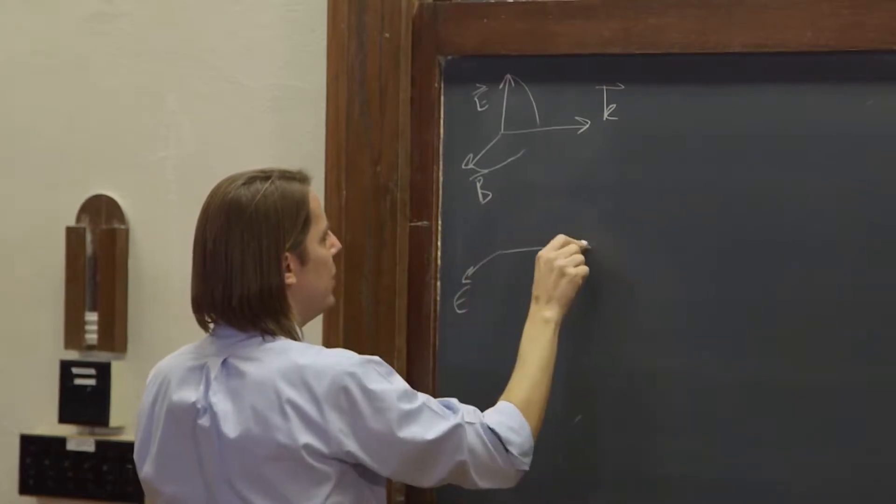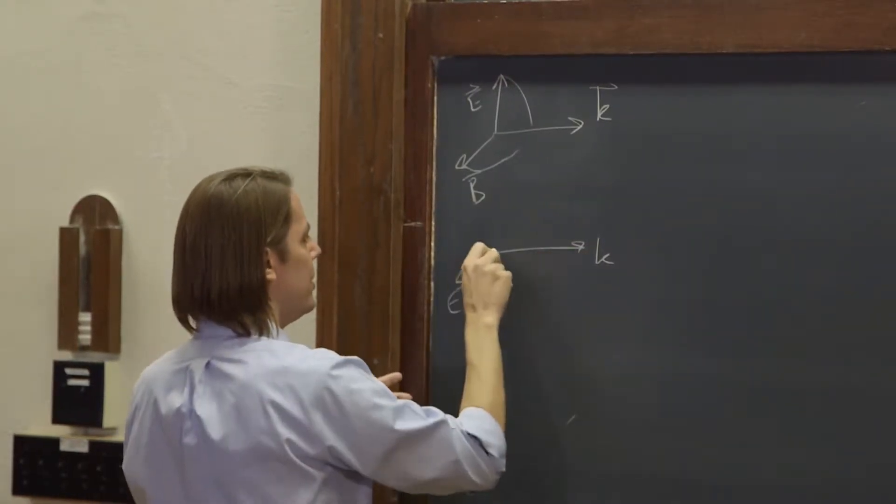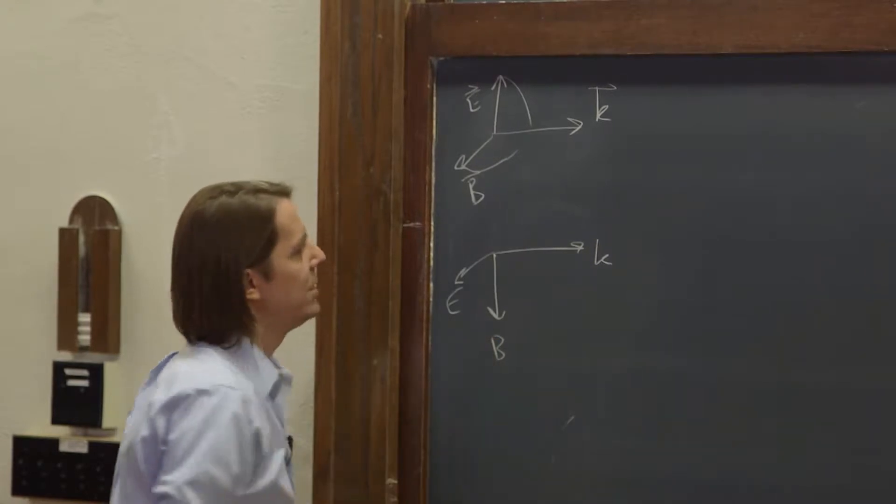E this way, K that way, and then E cross B still has to be K, and B could be down.